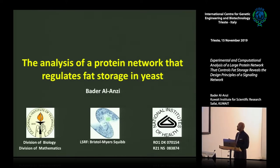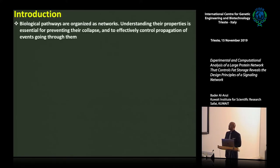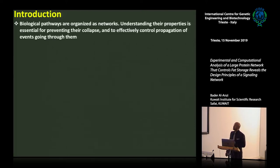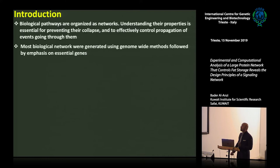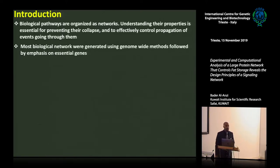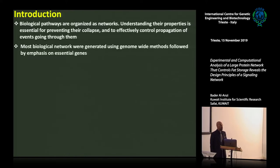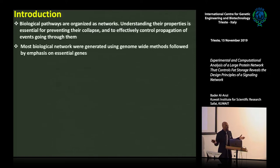The title of the talk is 'The Analysis of a Protein Network that Regulates Fat Storage in Yeast.' I'd like to start with a brief introduction. As many of you know, biological pathways are organized as a network. Understanding their properties is essential for preventing their collapse and effectively controlling the propagation of events going through them. Most biological networks we deal with were generated using a genome-wide method, followed by emphasis on what we call essential genes — genes that, when broken, cause the organism to die.